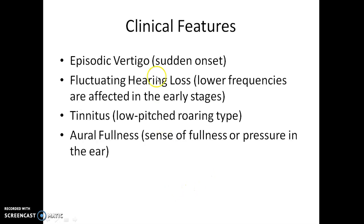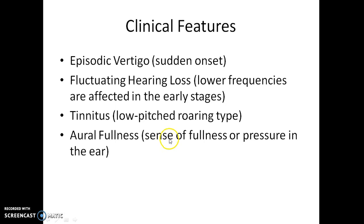The four cardinal features of Ménière's disease are vertigo, hearing loss, tinnitus, and aural fullness. The vertigo is episodic and sudden in onset. The hearing loss is fluctuating and lower frequencies are affected in early stages. The tinnitus is low-pitch and of a roaring type.